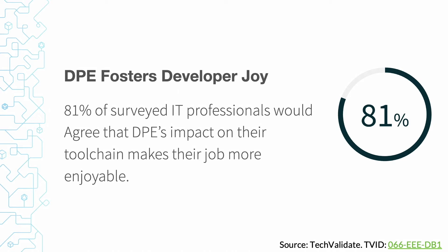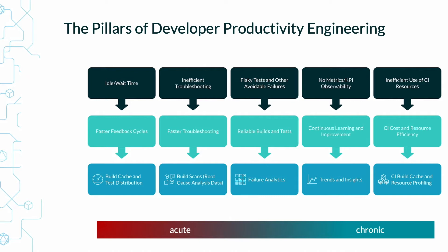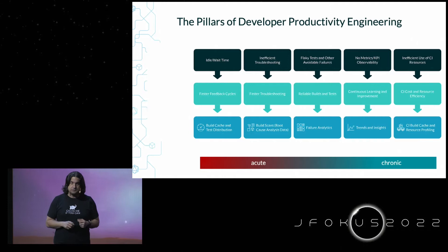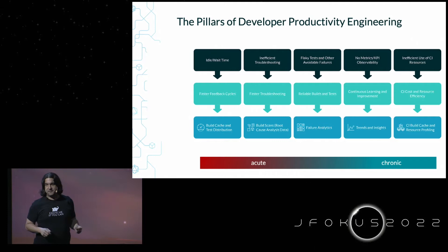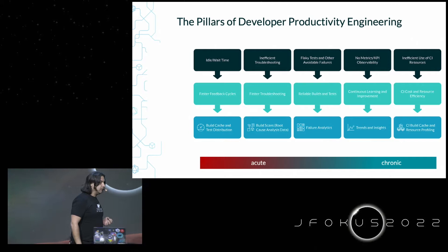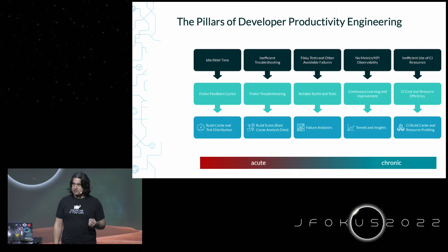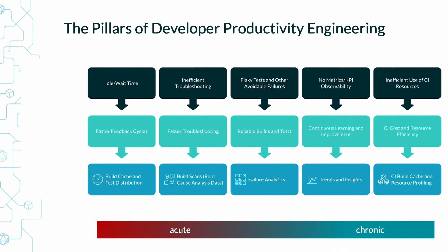Developer productivity engineering fosters developer joy. In the same study, 81% of respondents agreed that DPE's impact on their job made it more enjoyable. So how do we do this? Again, it's all pretty pragmatic. We have some acute pains being felt by organizations — all the way to more chronic issues. DPE wants to address all of them. We already talked about idle and wait time, probably the most acute problem. There are three technologies we recommend: build caching, predictive test selection using machine learning, and test distribution.